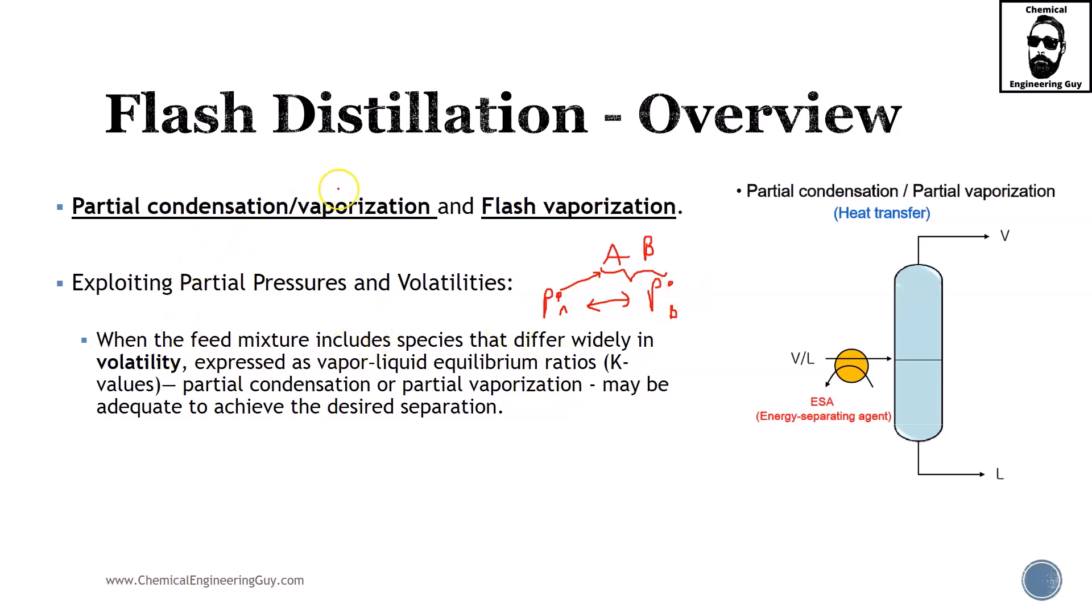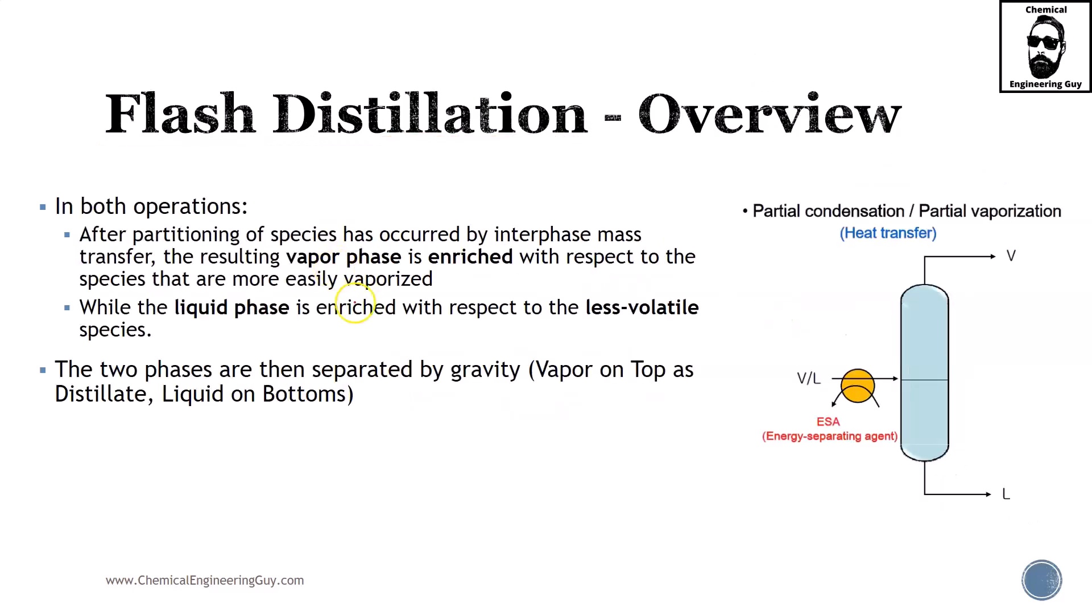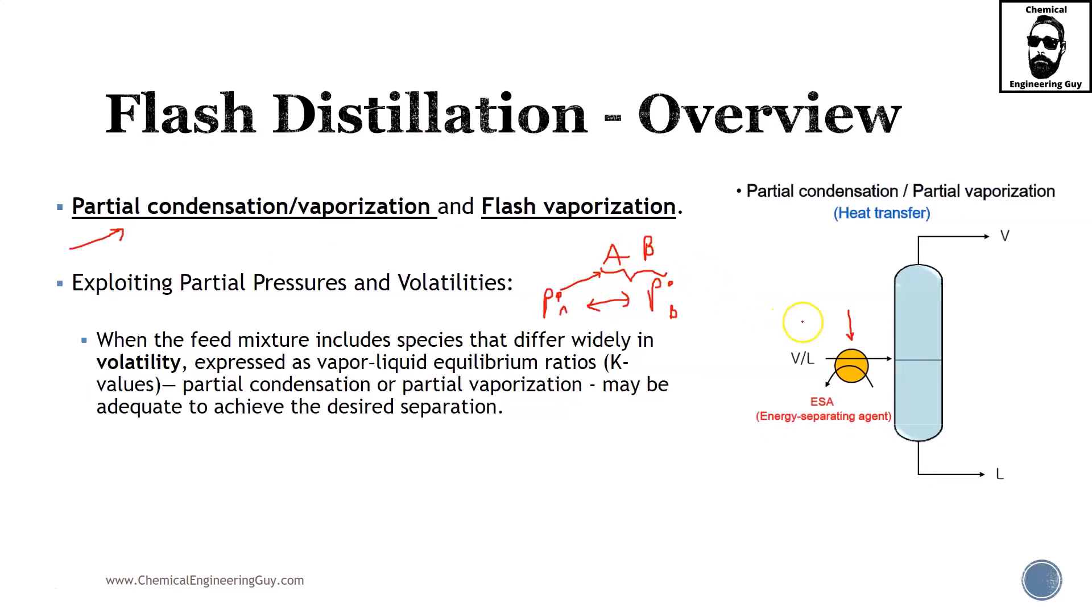Now flash distillation may or may not include a partial condensation or vaporization in the feed. Before we read all this content, I want you to have a better feeling on what's happening here. We got the feed which may or may not have only vapor, only liquid, or a mixture in between. You can send this directly to the drum, or if you know the equilibrium conditions, maybe you want to use a valve to change pressures or a heat exchanger to change temperatures.